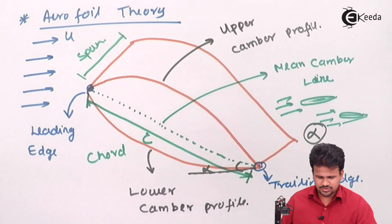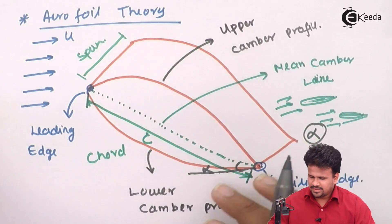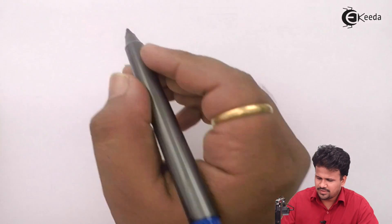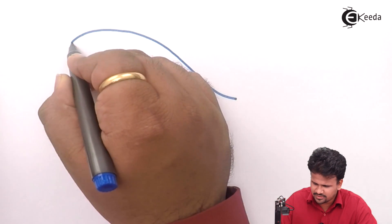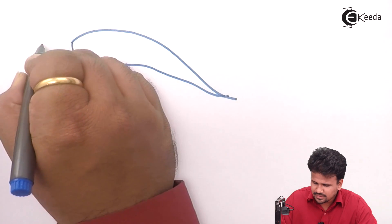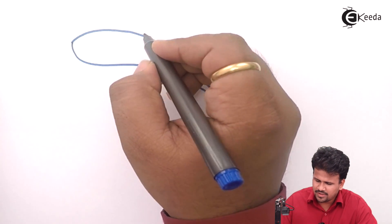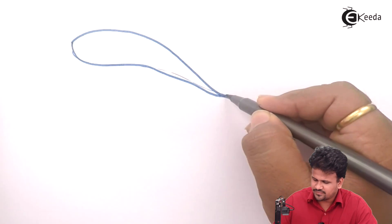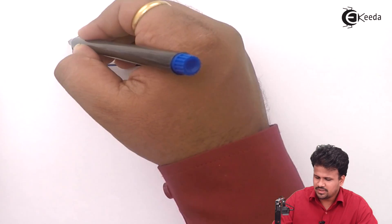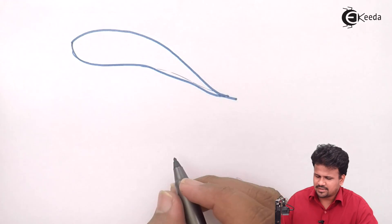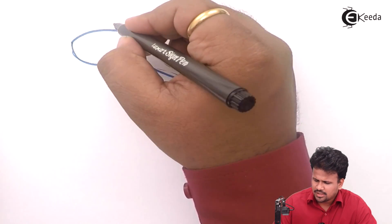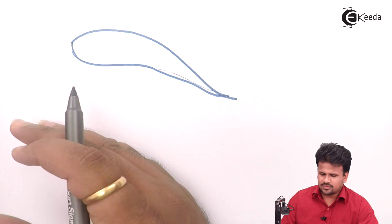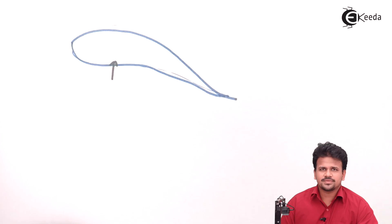Let us study what is stalling of an aircraft. There are two types of aerofoil. The aerofoil we considered previously was a symmetrical aerofoil. There are also aerofoils which are asymmetric. In an asymmetric aerofoil, the lower camber profile is different from the upper camber profile. This is used in aircraft wings such that if we increase the angle of attack, then the lift force can be increased.